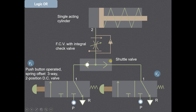This is the shuttle valve. This is the flow control valve with integral check valve, shown in the normally closed position of the check valve. This is the pressure and temperature compensated flow control valve. This is the cylinder side of the single acting cylinder, and this is the rod end or rod side of the single acting cylinder, which is spring controlled.